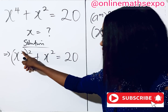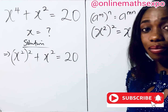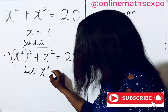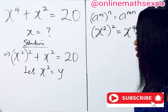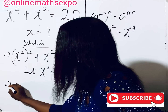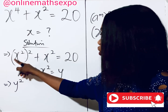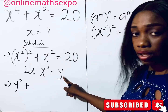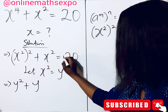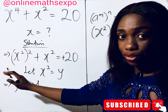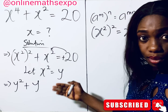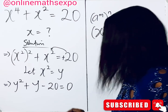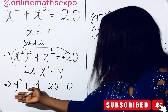You observe that x² appears twice, so we can use a substitution variable. Let x² = y. Then this equation becomes y² + y = 20. Taking 20 to the left side gives us y² + y − 20 = 0. This has led us to a quadratic equation.